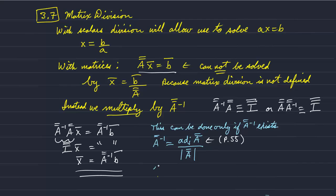So if the determinant of A is equal to 0, then the inverse does not exist.